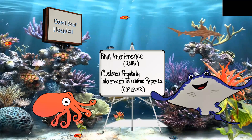Dr. Ray says that RNA interference, or RNAi, is the easiest method. It can reduce the expression of the bad gene, allowing some of Bixby's color-changing cell function to recur. Or you can use clustered regularly interspaced palindrome repeats, or CRISPR, which is a bit more difficult but completely eliminates the bad genes and you get full color-changing back.